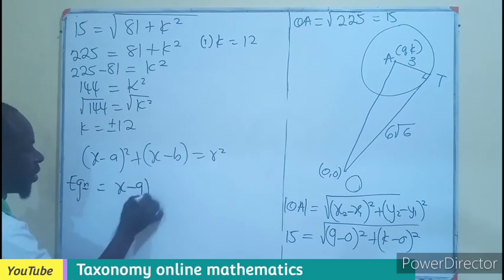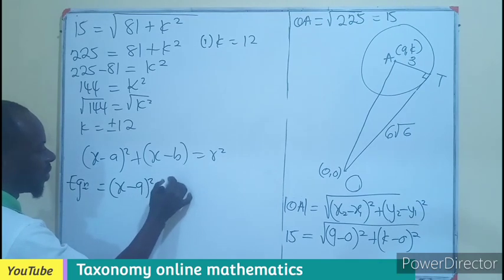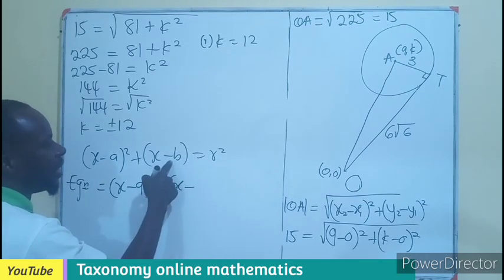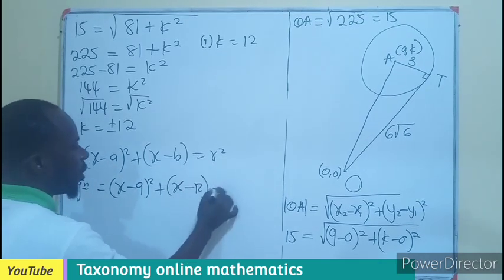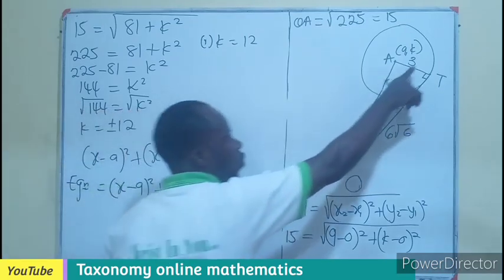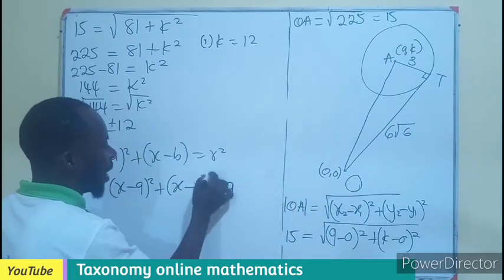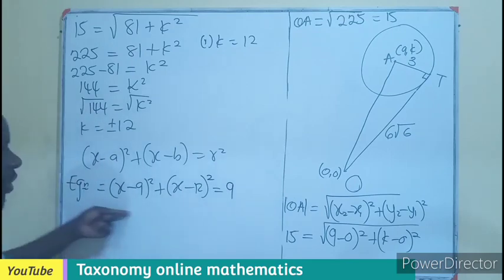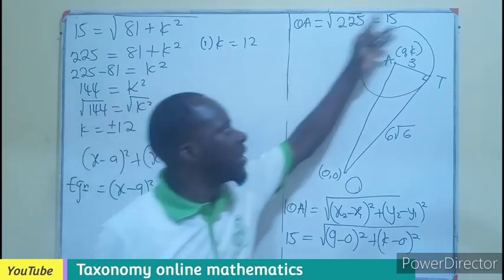So the equation is going to be X minus A, which is 9, squared plus Y minus B, which is now 12, squared equals to R squared. And that will be 3 squared, which is 9.